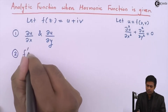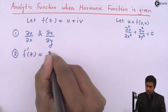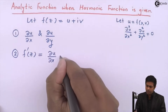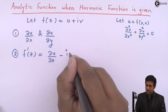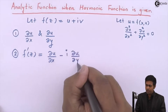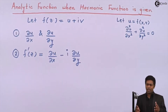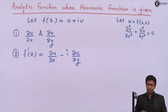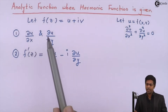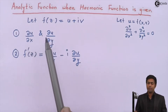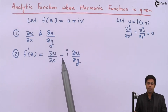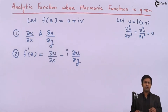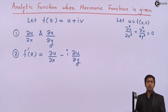Step two: the formula for the derivative of an analytic function is f'(z) = ∂u/∂x − i·∂u/∂y. Using this formula, we substitute the values of ∂u/∂x and ∂u/∂y obtained in step one to get the value of f'(z).